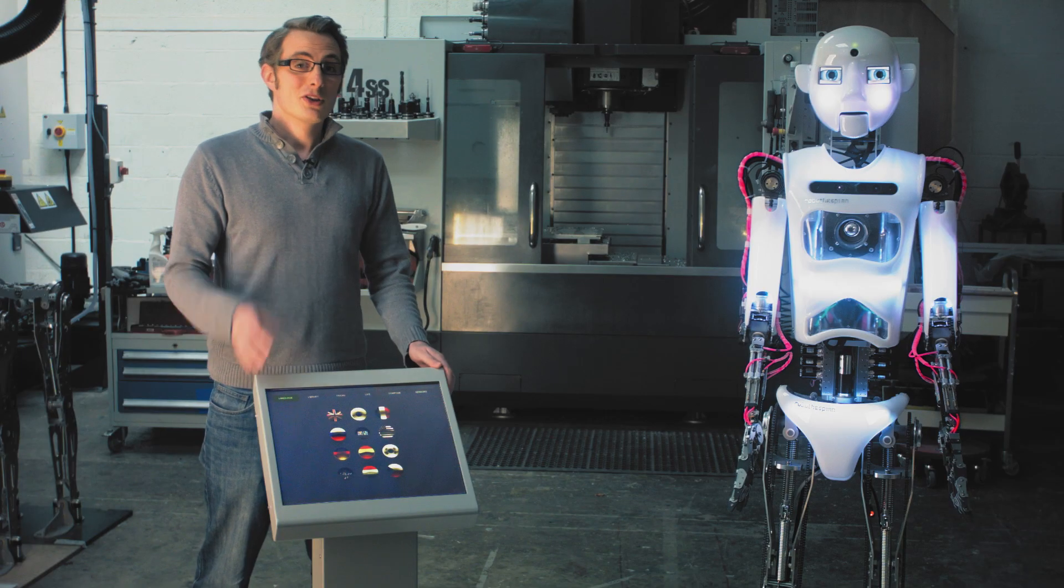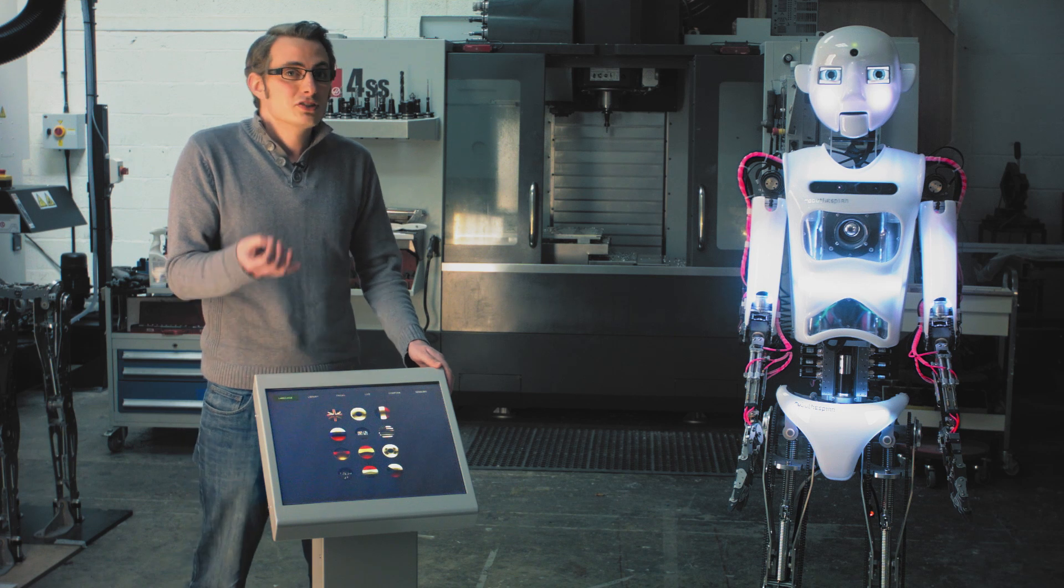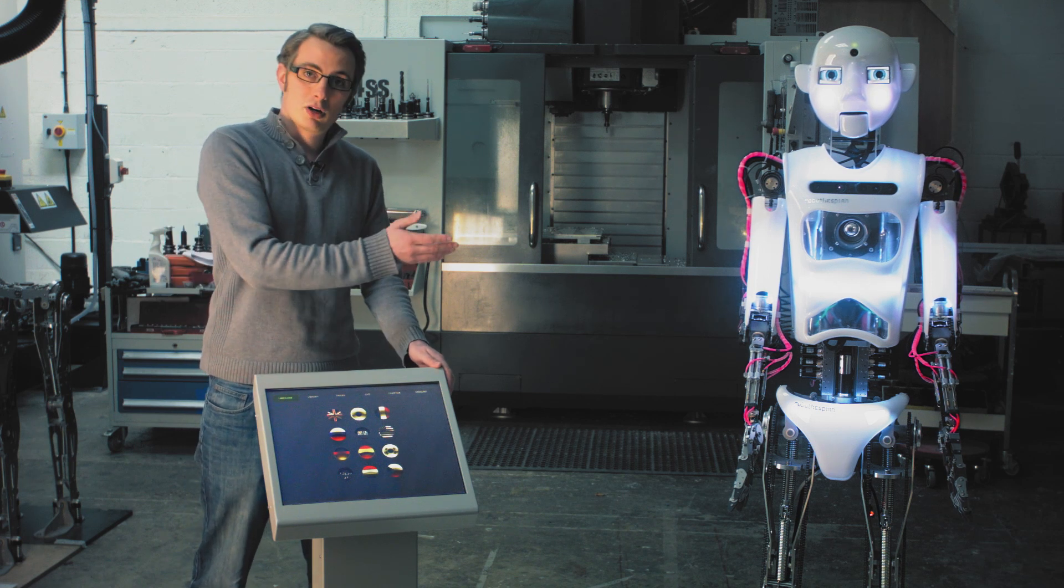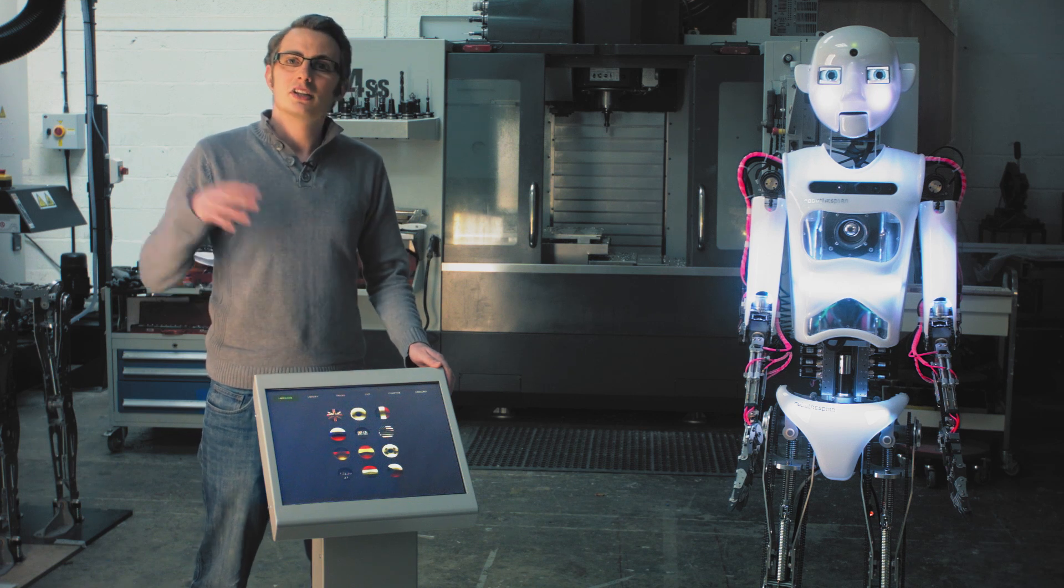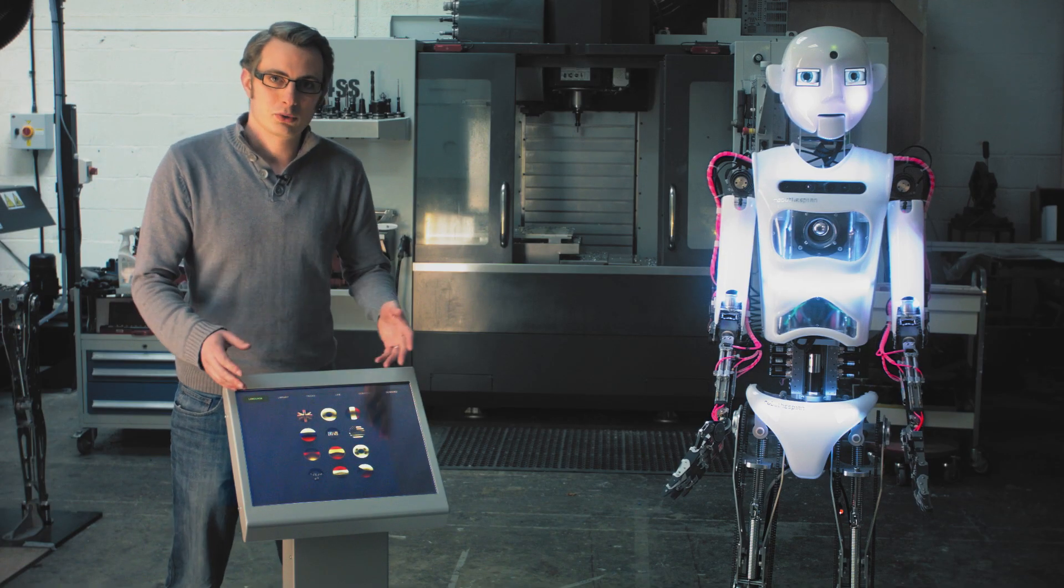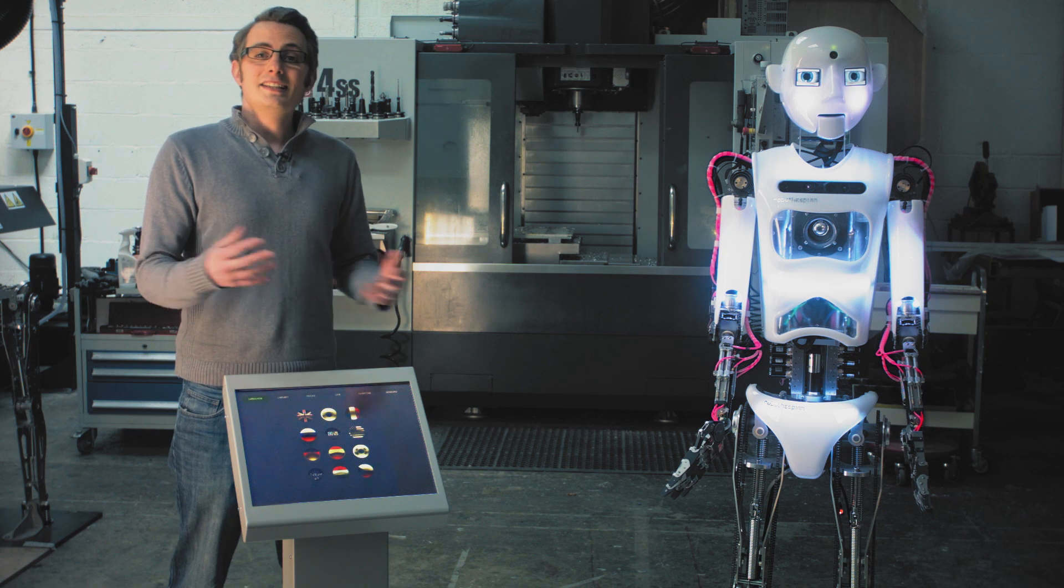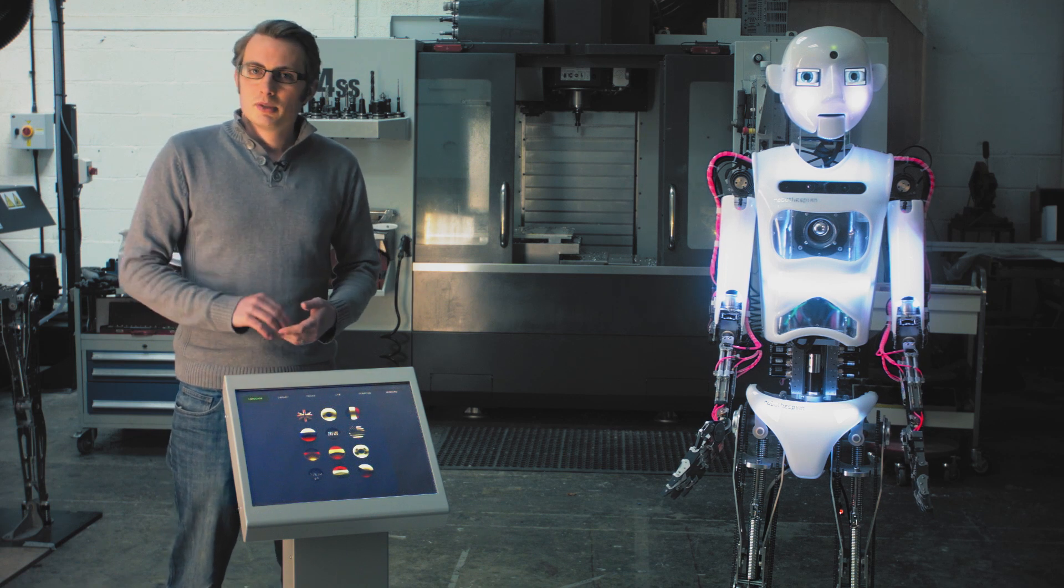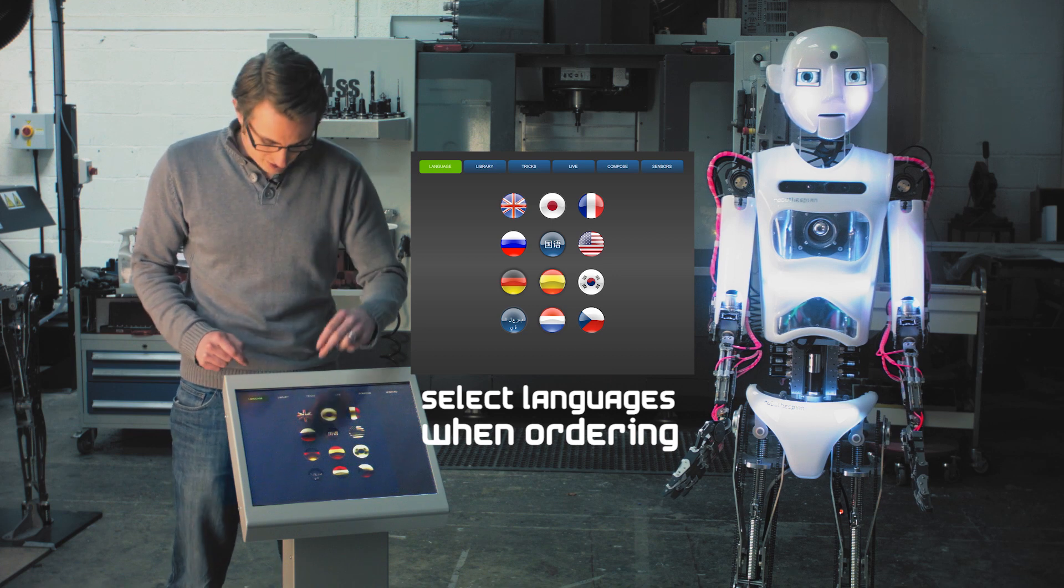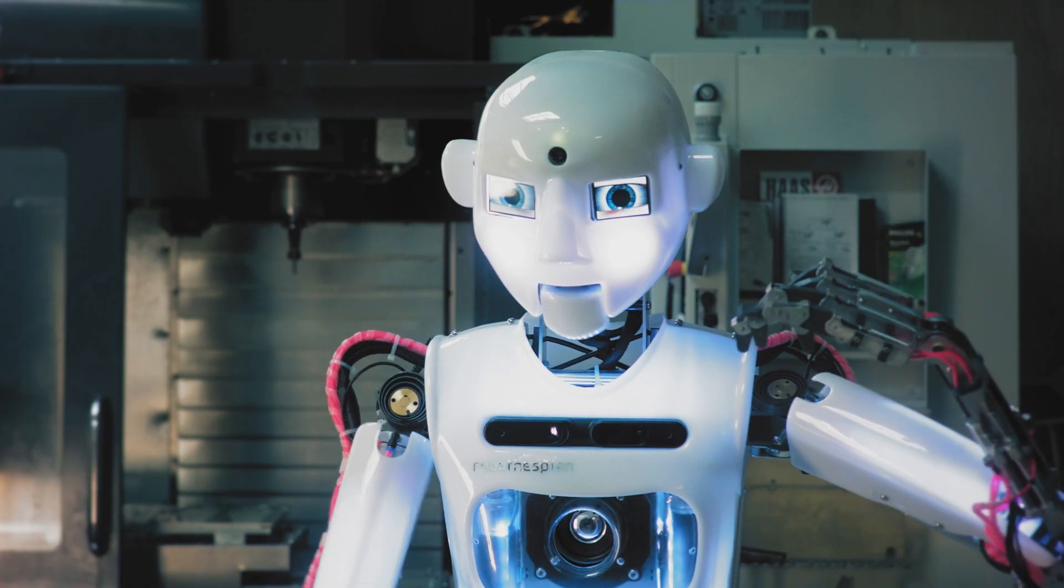The touchscreen is a very easy way to control the robot. There are other options available to control Robothespian, but we'll get to those in a later tutorial. The first thing you'll notice is the language screen. This is a very easy way of selecting the language you want - simply tap the flag and you're good to go. We are going to tap the British flag.